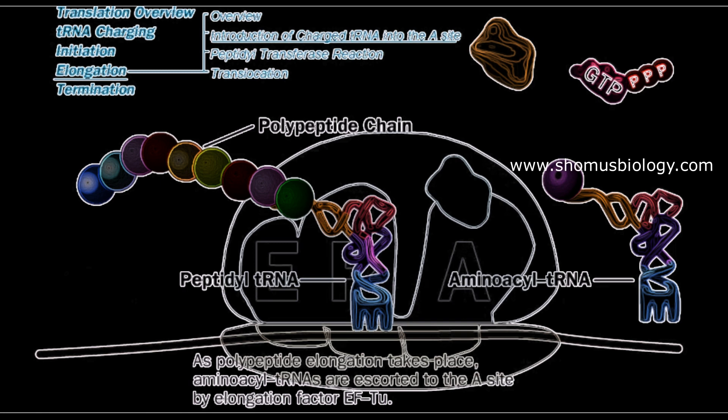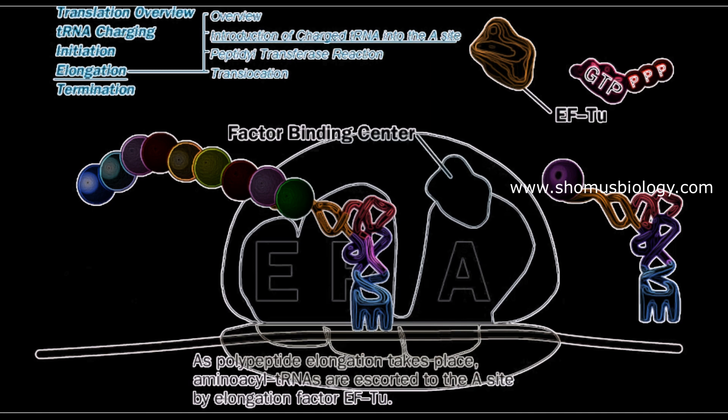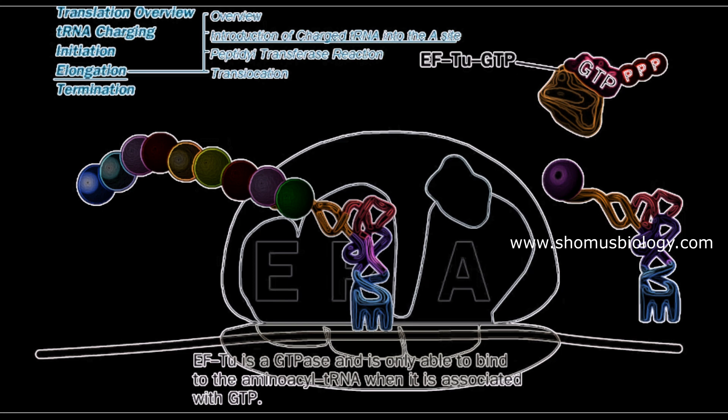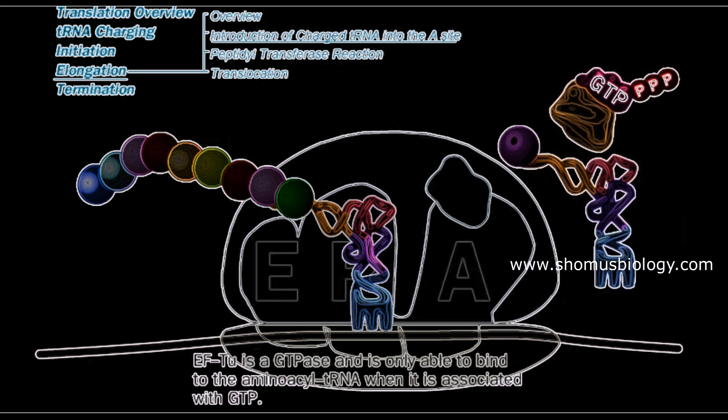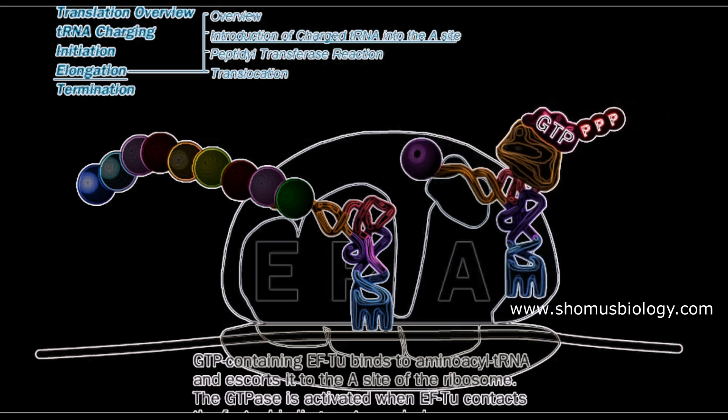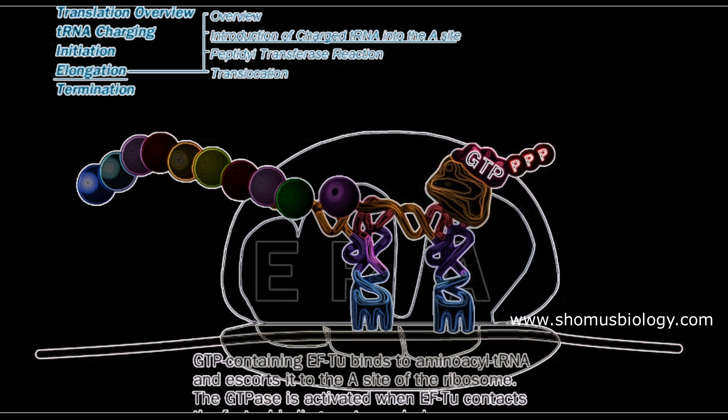But this process is regulated by multiple factors, particularly EF-Tu which is a GTPase. So EF-Tu is a carrier that escorts the aminoacyl-tRNA to the A-site. EF-Tu with GTP brings the aminoacyl-tRNA to the A-site, you can clearly see how it's done, how it's escorted. So it transfers it to the A-site.